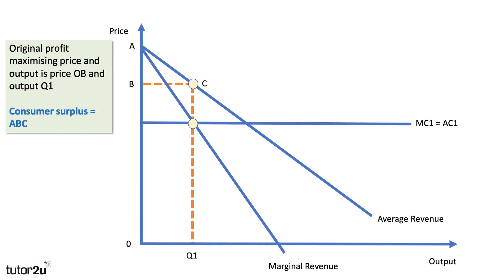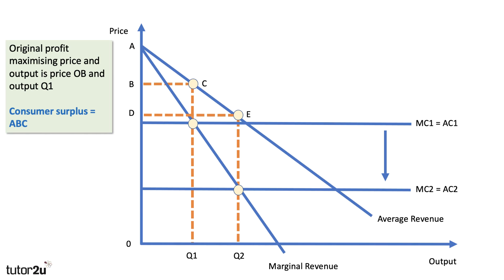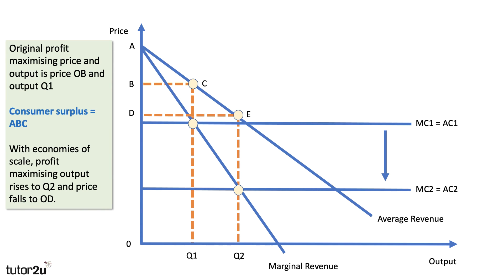With economies of scale, the unit costs of production come down. With a big fall in unit cost, ceteris paribus, economies of scale leads to an increase in the profit-maximising output from Q1 to Q2 and a fall in the price charged by the firm from OB to OD. That will have consequences for profit, but also for consumer welfare. The profit-maximising output rises to Q2 and the price falls to OD, giving a new level of consumer surplus of ADE — an increase of BCED. Therefore, economies of scale can, in theory, lead to an improvement in consumer welfare as shown by an increase in consumer surplus.